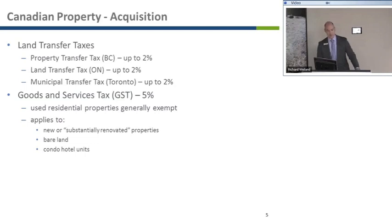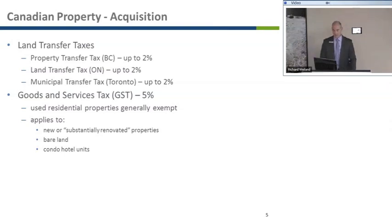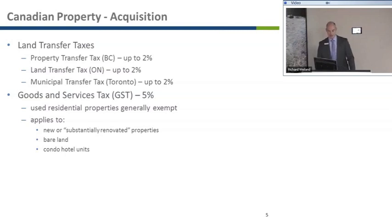In addition to land transfer taxes, when purchasing a property in Canada, a goods and services tax of 5% may apply. GST does not apply generally to used residential properties, so if somebody's buying a cottage or a condo that's been previously occupied, it usually will not be subject to GST. But new properties or substantially renovated properties will be subject to GST. Some purchases of bare land and condo hotel units, popular in places like Whistler, may also have GST applied even if they're not new.